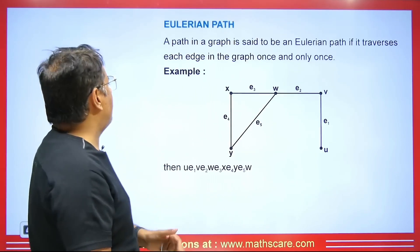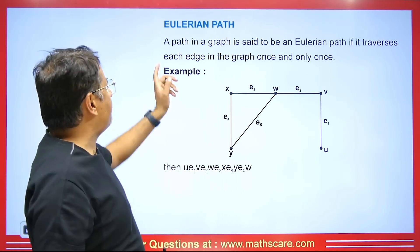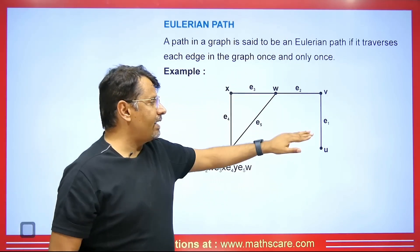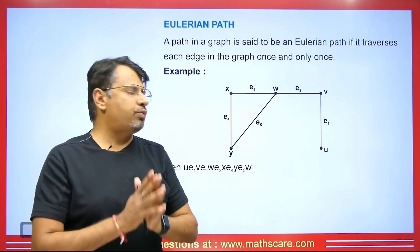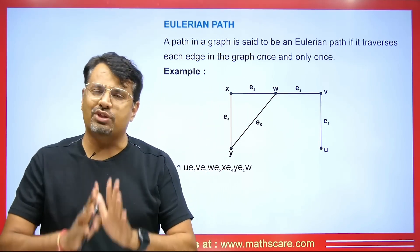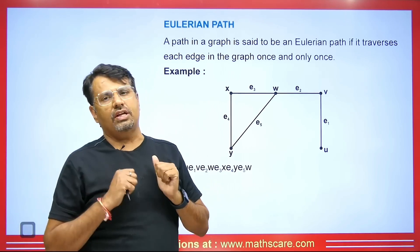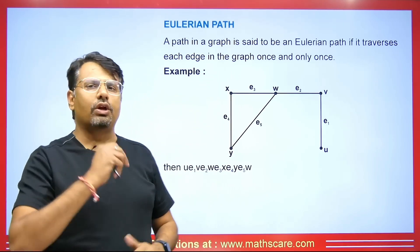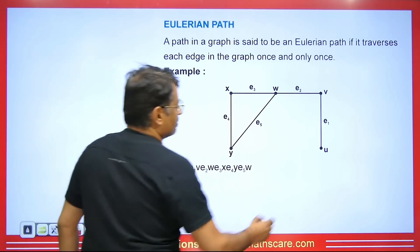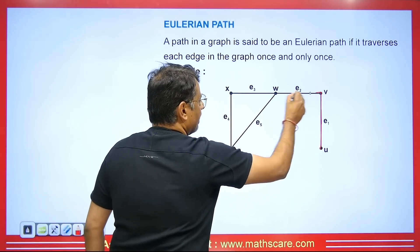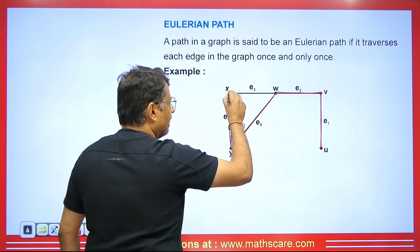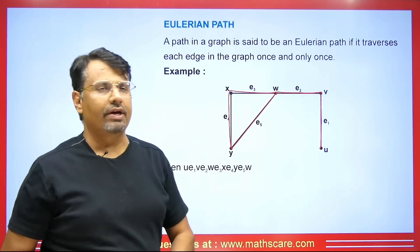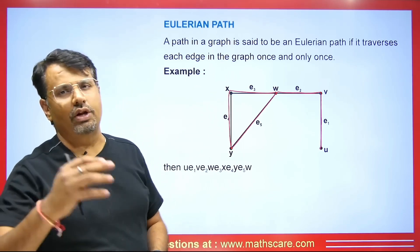We will discuss the Eulerian path. A path in a graph is said to be an Eulerian path if it traverses each edge in the graph once and only once. So when we take a walk within the graph, we should cover all edges and not repeat any. A walk which covers all edges without repeating is known as an Eulerian path. For example, starting here and covering every edge exactly once gives us: U, E1, V, E2, W, E5, Y, E4, X, E3, W — that is an Eulerian path.